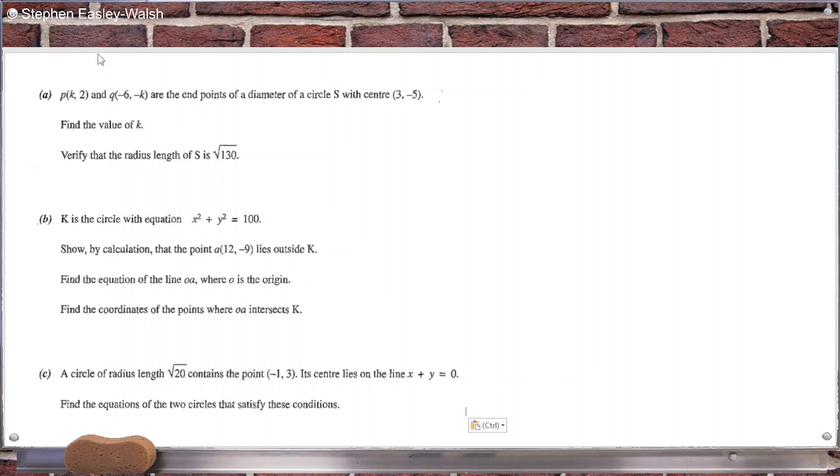Okay, let's have a look here. So if they're the endpoints of the diameter and that's the centre, it means that's the midpoint of these two here. So the midpoint would be k minus 6 over 2, that should equal 3, and also 2 minus k over 2 should equal minus 5.